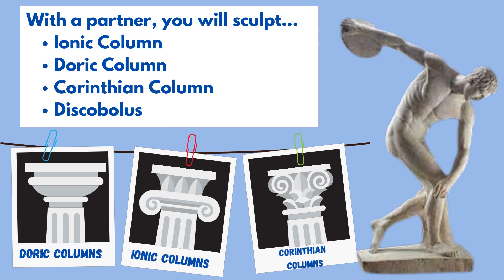So the next thing you're going to do is with a partner you are going to sculpt. You will attempt to sculpt our three orders of Greek columns: a Doric column with a simple capital, an Ionic column with a scroll at the top, and Corinthian columns with fancy leaves and scrolls. After you sculpt those, you are going to sculpt the Discobolus — our ideal male throwing a discus. Once you sculpt these, take a picture for credit for this assignment. If you have any questions, please make sure to see your teacher. Good luck!